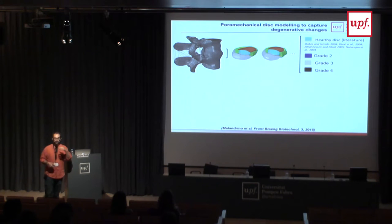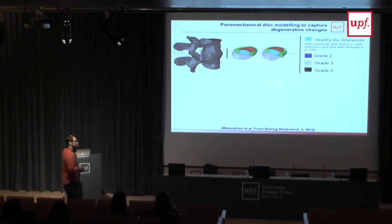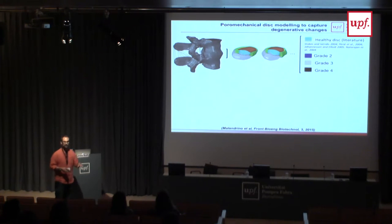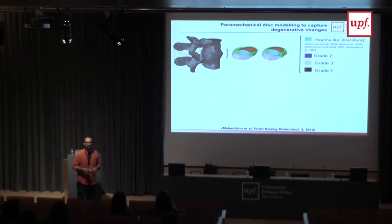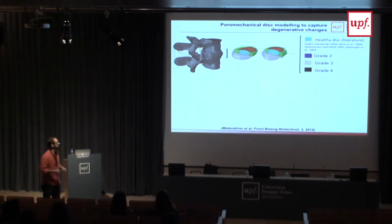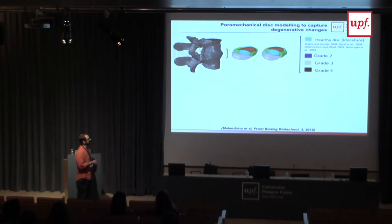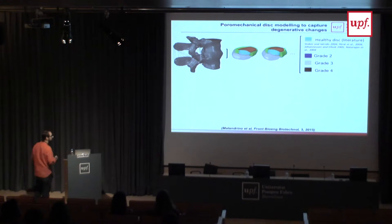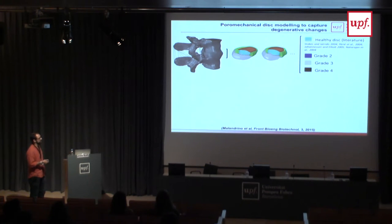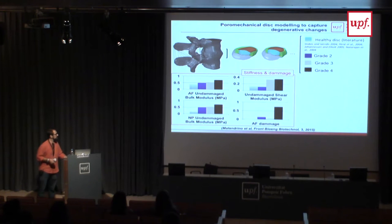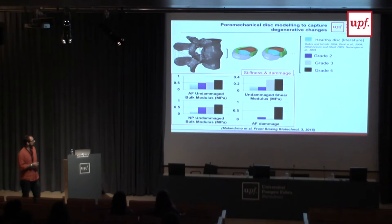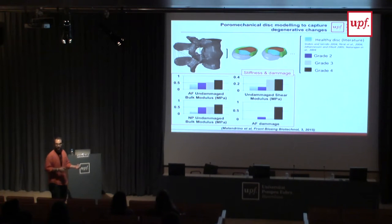To assess whether this new model was reasonable, we performed specimen-specific modeling. We obtained degenerated cadaveric spine specimens that were tested in vitro and imaged clinically; from those images we rebuilt models with intervertebral discs of different shapes and degeneration grades, using the Pfirrmann degeneration grading system — from almost healthy, to moderately degenerated, to advanced degeneration.